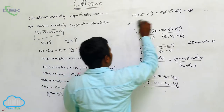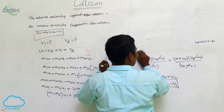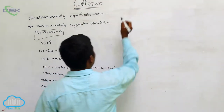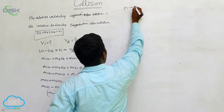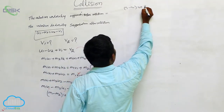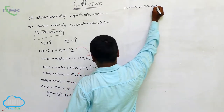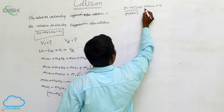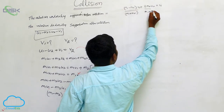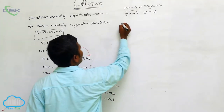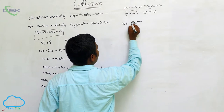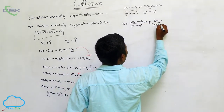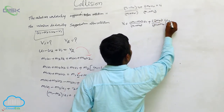From this equation, what we need is the value of V1. So V1 is equal to (M1 minus M2) U1 plus 2 M2 U2, all divided by (M1 plus M2). This is the V1 value. Now we are going to find the next value, V2.